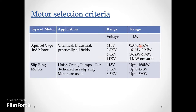Depending on the voltage level available, you can select your motor rating. For example, a 160kW motor can be started at 415V. There is no strict thumb rule — even a 180kW or 100kW motor can be started on 415V. These are just guidelines to select voltage levels as per availability.